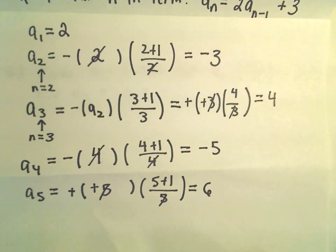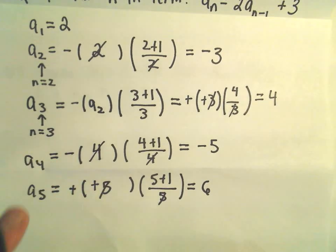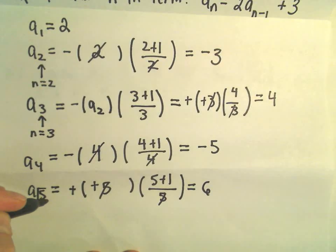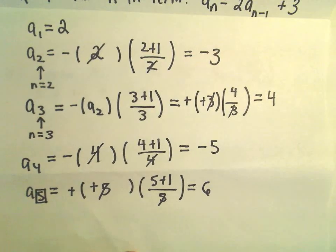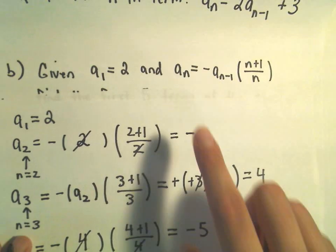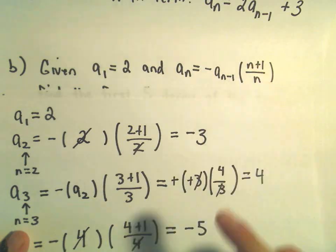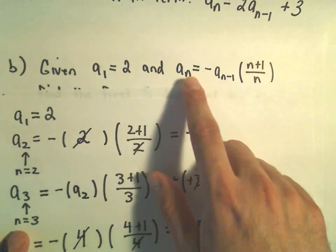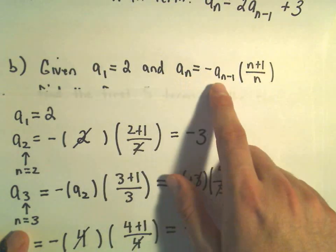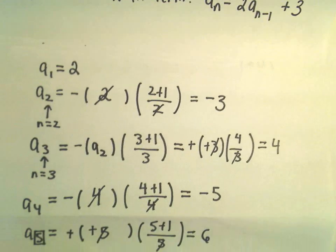You can probably guess the next few terms if you had to. Whatever your subscript is, that's your n value, and in our formula everywhere there's an n, we just replace n with that value and do the arithmetic.